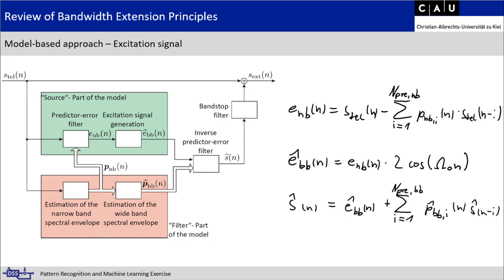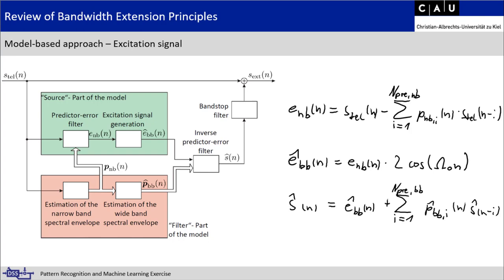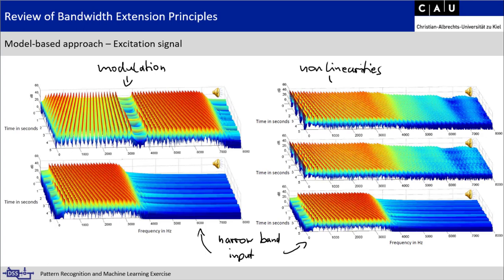Looking at two examples for excitation signal extension: the narrowband input signal occupies only up to half of the maximum frequency. On the top left, modulation-based extension simply flips the spectrum to the other side. On the top right, non-linear bandwidth extension avoids the spectral gap present in modulation-based methods — that is the benefit of non-linear excitation extension — but non-linearities also introduce other problems that must be considered.